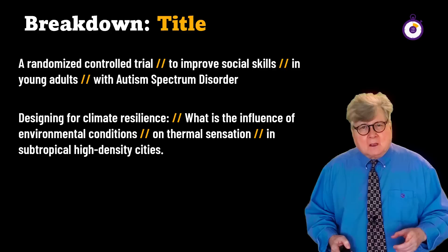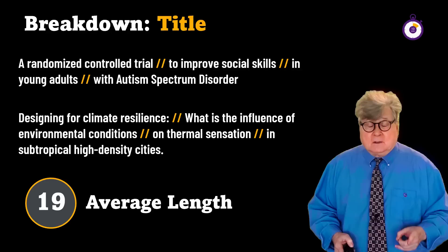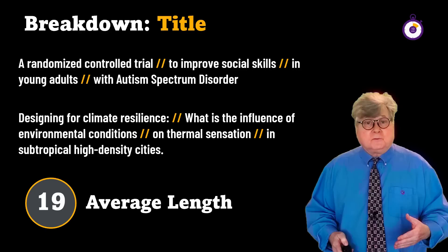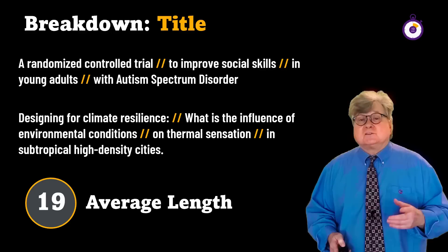The average length of an academic journal article title is 19 words, for a reason. Your job is to divide that title into parts, and taken together those parts provide a picture of what is in the article. During your research, you can often decide to include or exclude an article based on its title once you understand how to break it down.